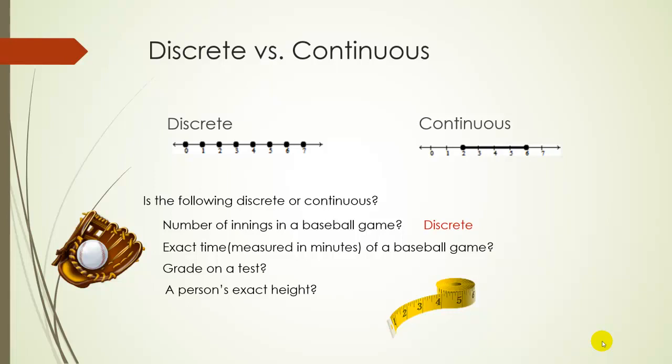What about the exact time of a baseball game, measured in minutes? So even though it's measured in minutes, it could be a fraction of a minute. The time could be something like 200.3892141 minutes, it could be any number of minutes. So it's continuous.